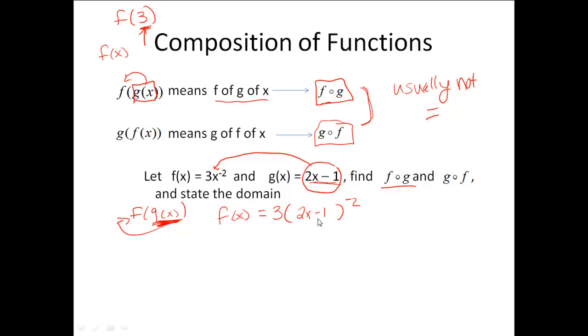So there's my g inside my f function. Once you get to this point, you do need to simplify it out. So I've got to take care of this negative exponent first. So I would actually have 3, and then that 2x minus 1 squared would move to the bottom.